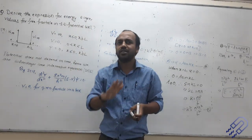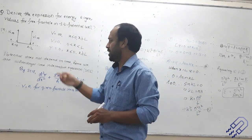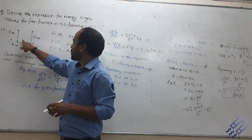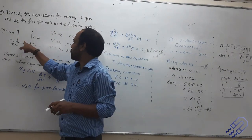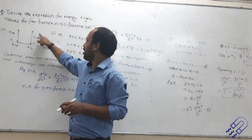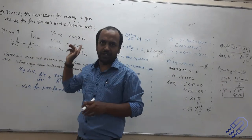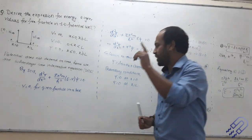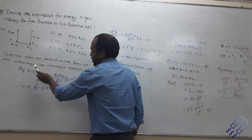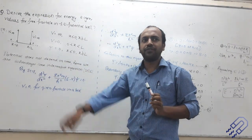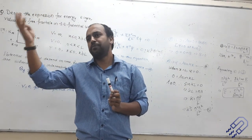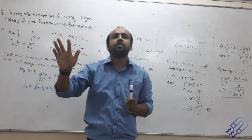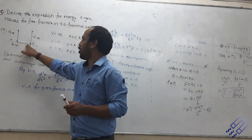Before I proceed, let me tell you this: when we look into the potential here, it does not depend on time. At any point of time, the potential inside will remain zero and the potential at the walls will remain infinity. Since it does not depend on time, in order to analyze this problem we have to use Schrödinger's time-independent equation. We have derived two equations — time-dependent and time-independent — but here the time-independent is correct because the potential does not depend on time; it is only a function of position.